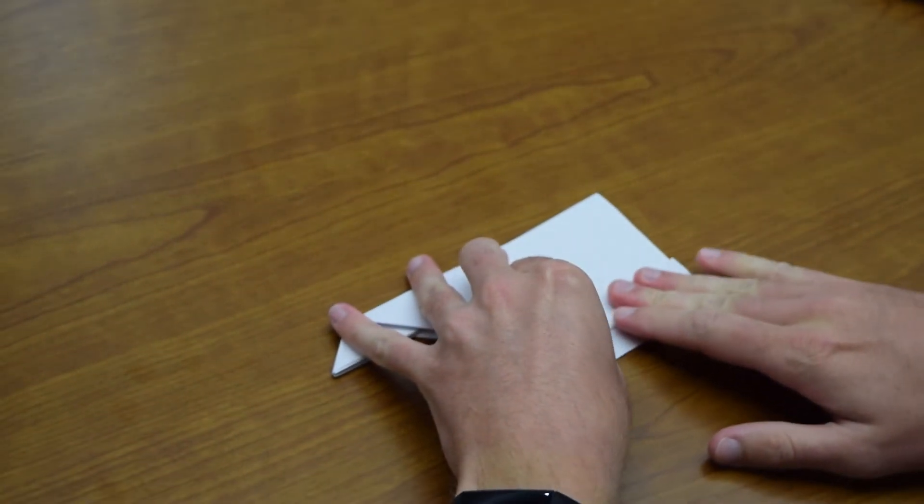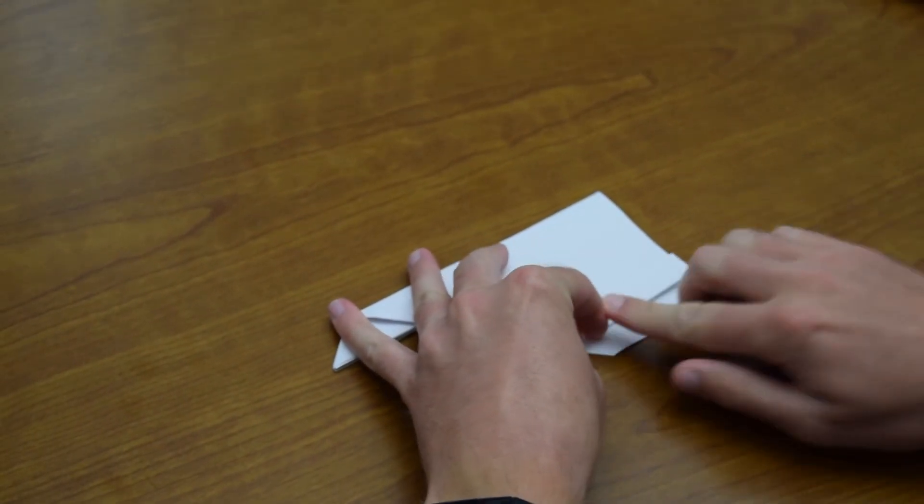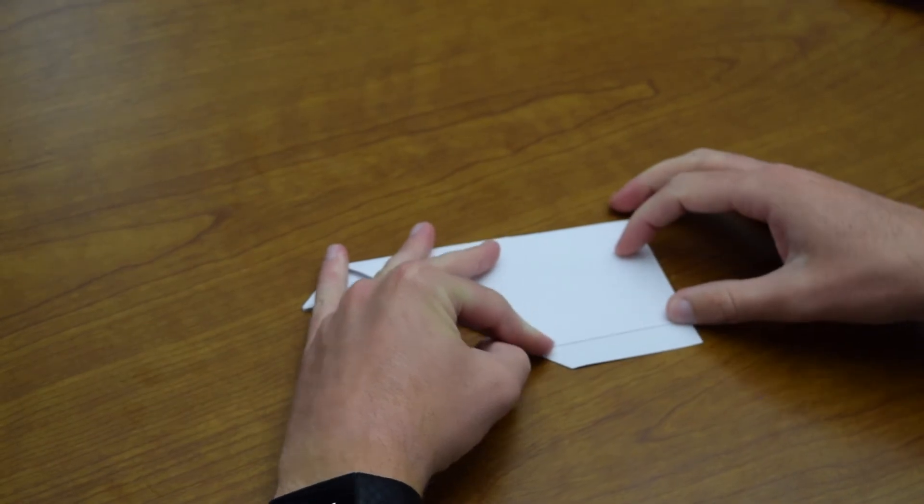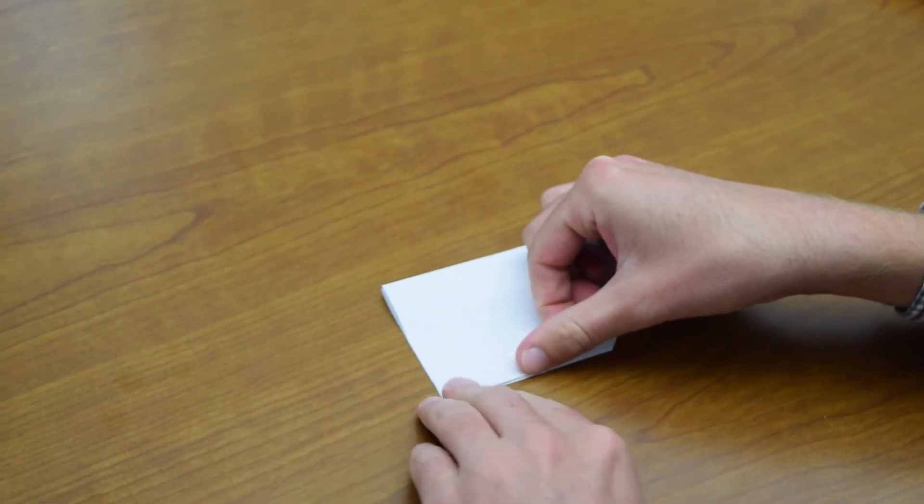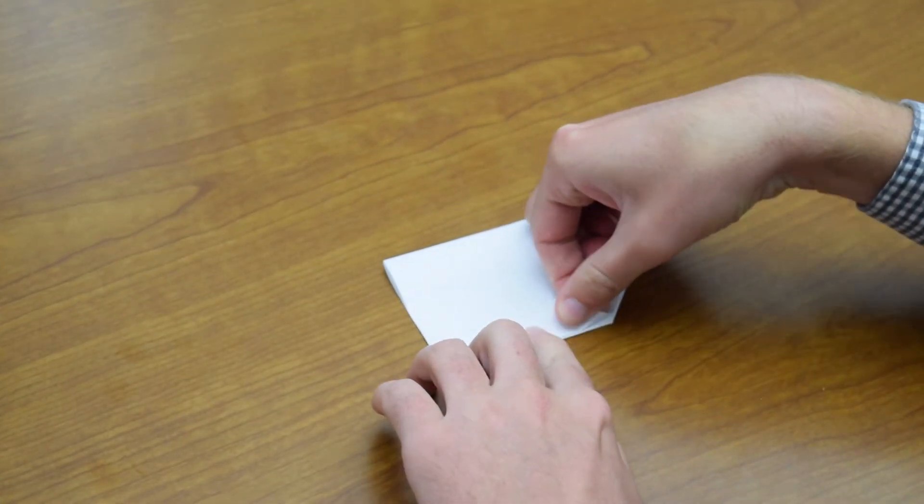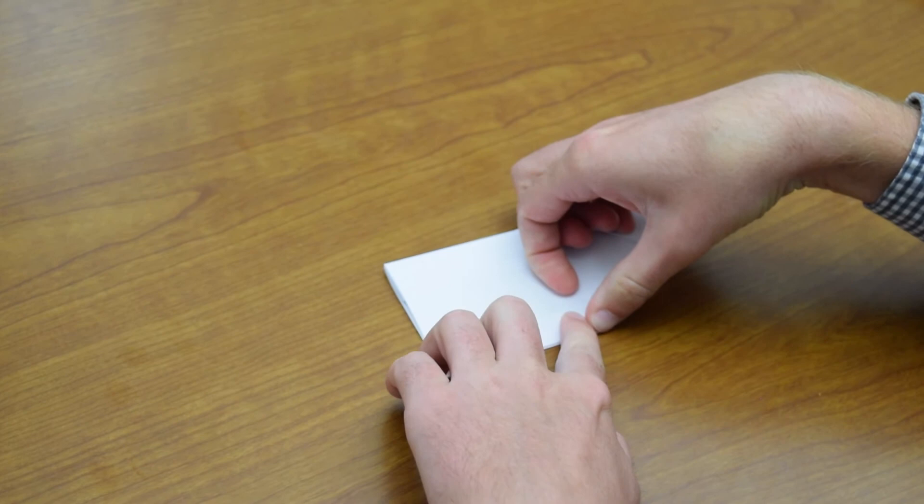So fold up, this is maybe half an inch or so, just folding straight up like that. Then we're going to do the same thing on the other side. Try to get those fins to be in line with each other.